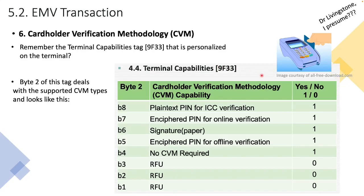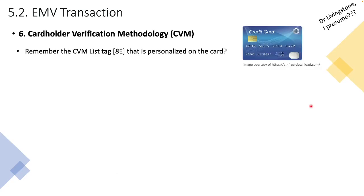Byte two shows things like: plain text PIN for ICC verification set to yes, enciphered PIN for online verification set to yes, signature set to yes, enciphered PIN for offline set to yes, no CVM, and others. Obviously, if the terminal did not support plain text PIN for ICC verification, it would be set to zero, indicating no. Now, let's also go back to the EMV issuing section — tag 8E, which is the CVM list, and we personalize this on the card.